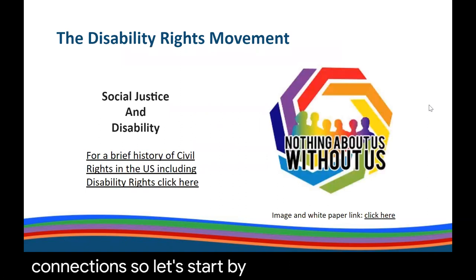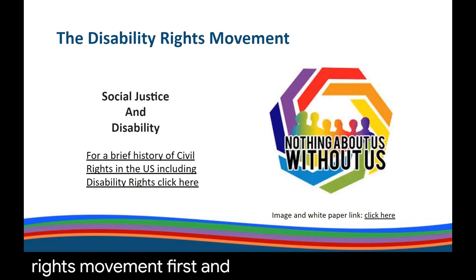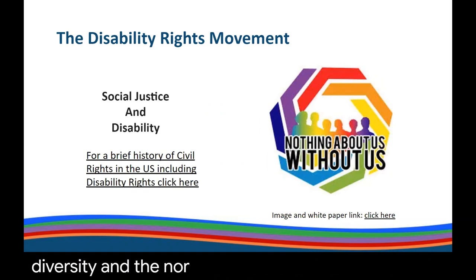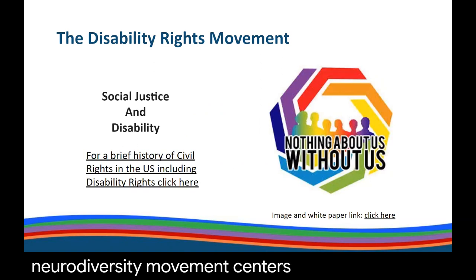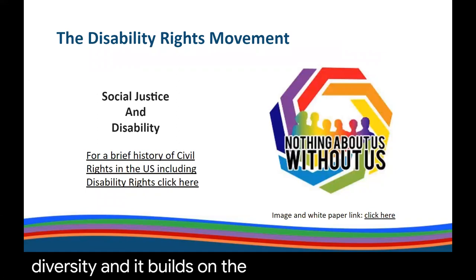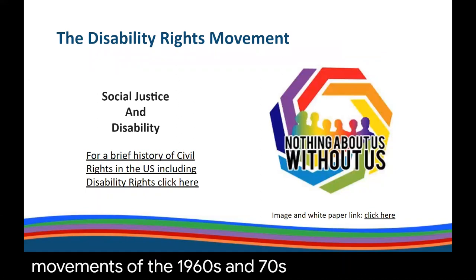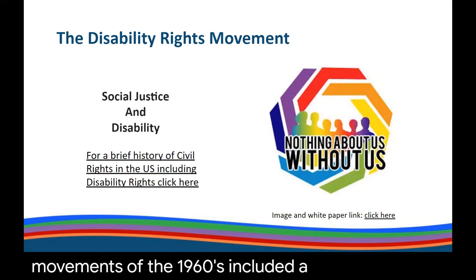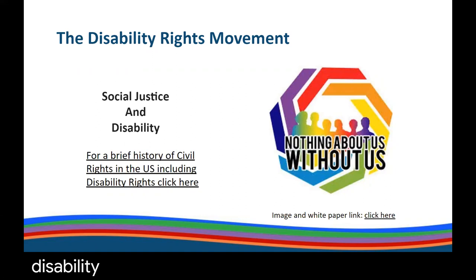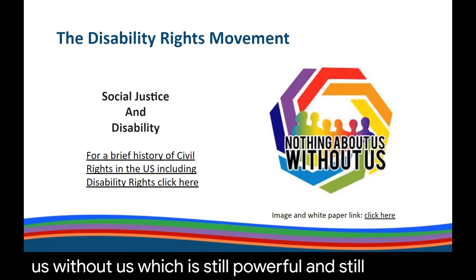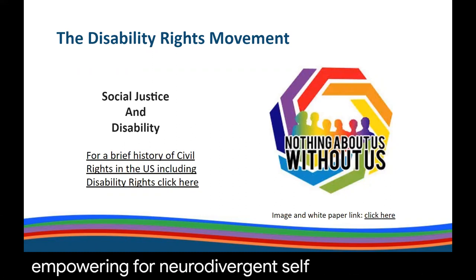Let's start by considering the disability rights movement. An understanding of disability history and models of disability may help situate neurodiversity and the neurodiversity movement. The neurodiversity movement centers disability as diversity and it builds on the disability rights movements of the 1960s and 70s. Social justice movements of the 1960s included a focus on disability, and the disability rights movement adopted the mantra 'nothing about us without us,' which is still powerful and empowering for neurodivergent self-advocates and allies today.